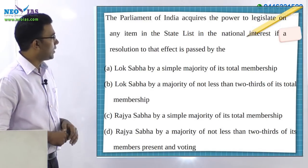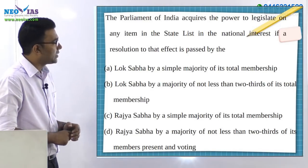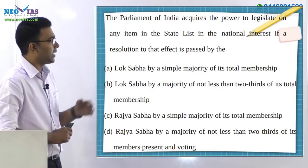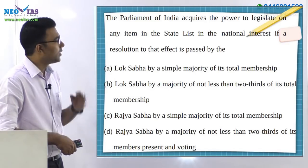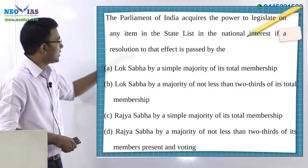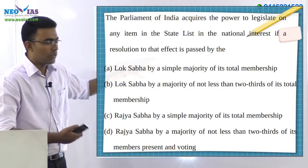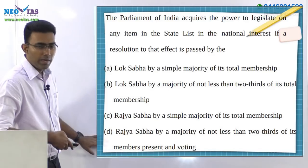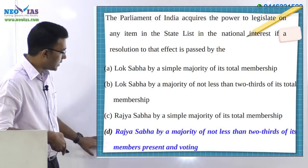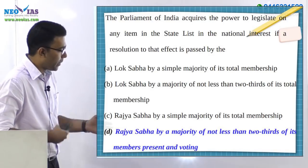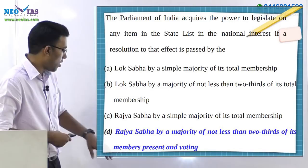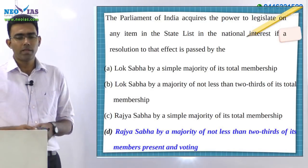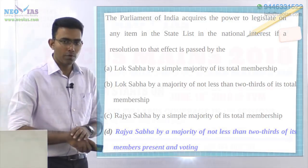Coming back to the question — the Parliament of India acquires the power to legislate on any item in the state list in the national interest if a resolution to that effect is passed by whom — the answer is option D: Rajya Sabha by a majority of not less than two-thirds of its members present and voting has to pass the resolution. Thank you, see you on Monday.